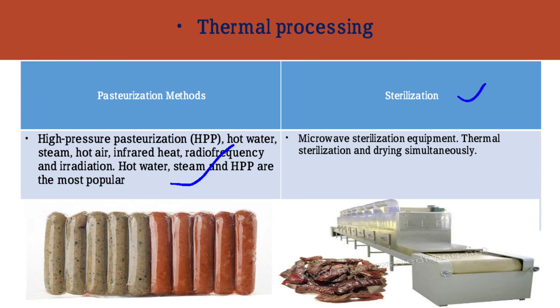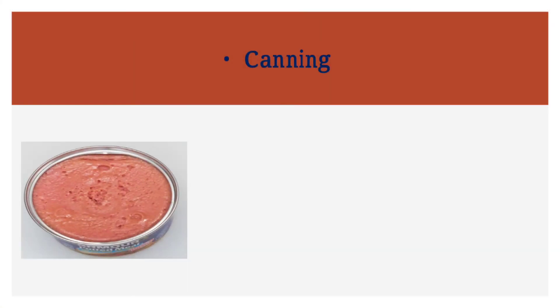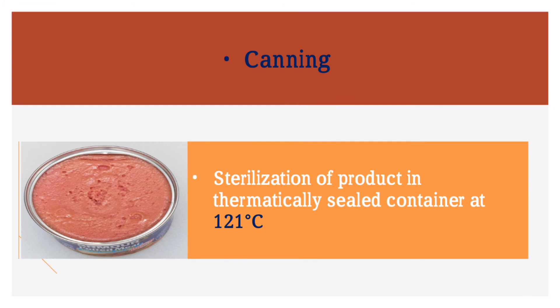In the sterilization method of thermal processing, meat is processed through microwave sterilization equipment in which thermal sterilization and drying of meat products occur simultaneously. Canning is another method of meat preservation in which sterilization of the product is done in a hermetically sealed container at around 121 degrees centigrade. Temperature may be reduced if the pressure is increased in the container.